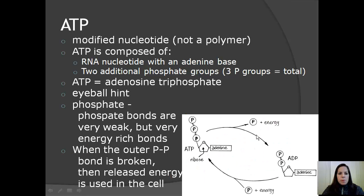That brings us to the end of comparing RNA and DNA. Now we're going to move on to ATP. So remember, ATP is a modified nucleotide, so it's not a polymer. ATP is composed of an RNA nucleotide with an adenine base, as well as two additional phosphate groups, which makes a total of three phosphate groups. There's one, two, three. ATP stands for adenine triphosphate. So how do you recognize ATP if you're looking at a whole bunch of molecules? You always want to look for the house, but the key to knowing it's an ATP molecule is it's got three phosphate groups sticking off the end of it instead of just one.